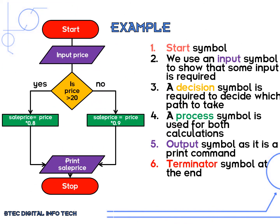Here we can see our example flowchart. We have terminator symbols to start and stop the flowchart. We use an input symbol to show that some sort of input is required — in this case it is the price of the item. A decision symbol is used to decide which path to take. If the price is greater than 20 then we go left where it says yes, and if it is not greater than 20 then we go to the right where it says no.